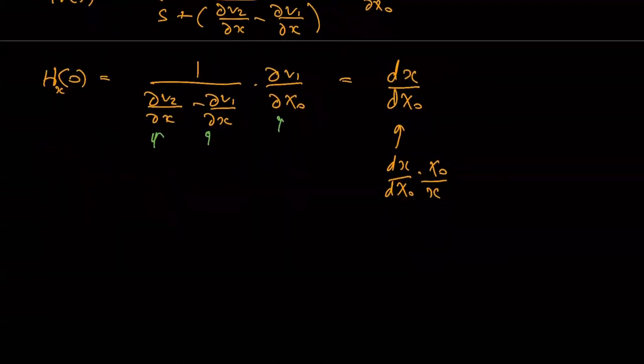In the process I will then scale all these things here. So dx by dx0, whatever I do on the left I have to do on the right as well. What I'm doing is I'm multiplying by x0 and dividing by x.